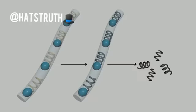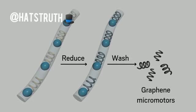The team takes the coils they made and reduces the graphene oxide to graphene, then washes away the oil and sodium alginate to isolate individual graphene micromotors.